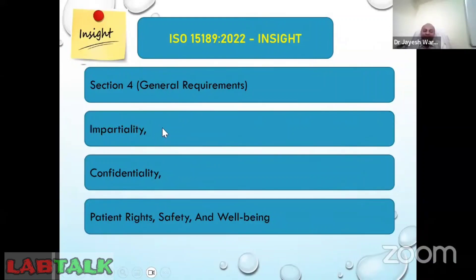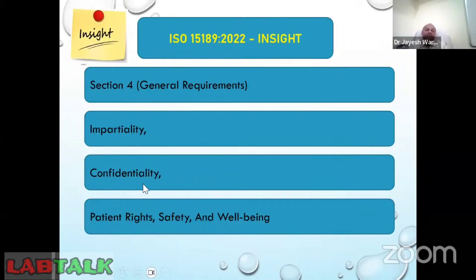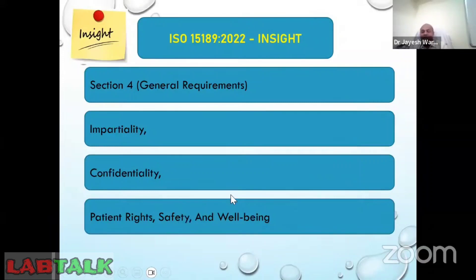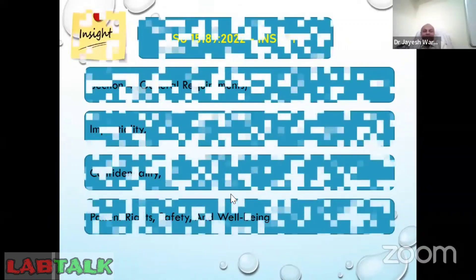Section four mainly addresses the impartiality of laboratory personnel and laboratory activities — all activities performed in your laboratory must be carried out in an impartial way. There is also a clause on confidentiality, requiring complete privacy of patient information. Clause 4.3 addresses patient rights, safety, and well-being. These are the general requirements in this standard.